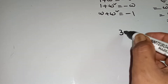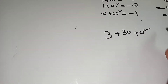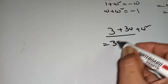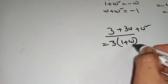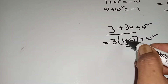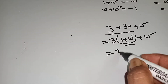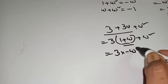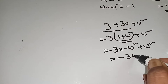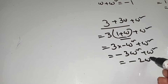Suppose given 3 plus 3 omega plus omega square. From the first two terms you take 3 common, giving 3 times (1 plus omega) plus omega square. The value of 1 plus omega is minus omega square, so this becomes 3 into minus omega square plus omega square.